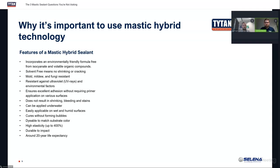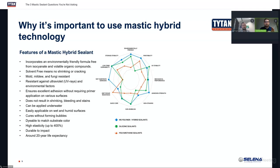Next I'm pulling up a chart. It shows polyurethane, silicone, and mastic hybrid sealant technology. The blue is the outermost and the closer you are to the outer edge the stronger or better it is. Blue is the MS polymer — the mastic hybrid sealant. Green is the silicone sealant. Red is the polyurethane sealant. Going around the chart: for environmental friendliness, mastic hybrids are the best — polyurethane is worst, silicone second best, and this MS technology is even more environmentally friendly than silicone.